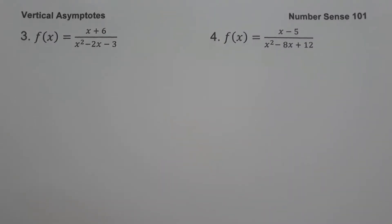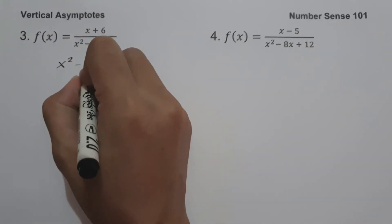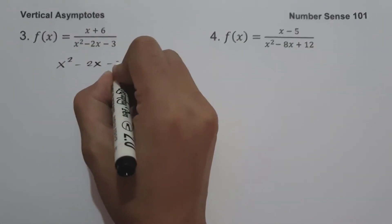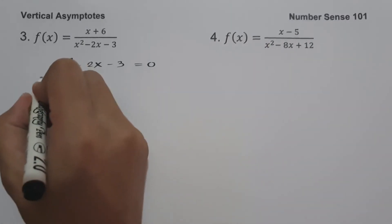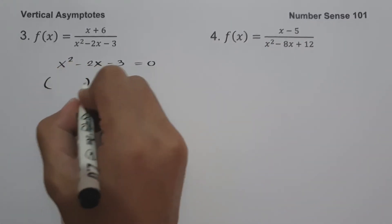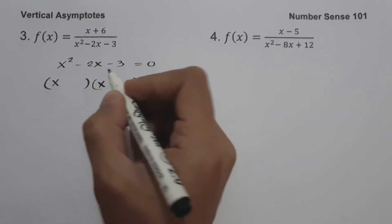On example number 3, we have f of x equals x plus 6 all over x squared minus 2x minus 3. To find the vertical asymptote, let us simply equate the denominator equal to 0. So let us have x squared minus 2x minus 3 equals 0. Let us find the factors of this expression. The factors of x squared are x and x.